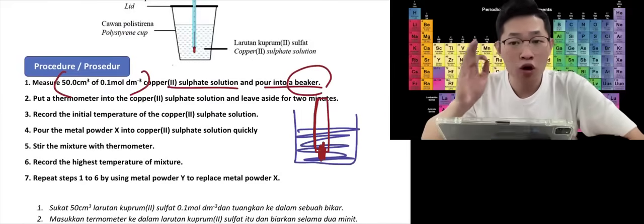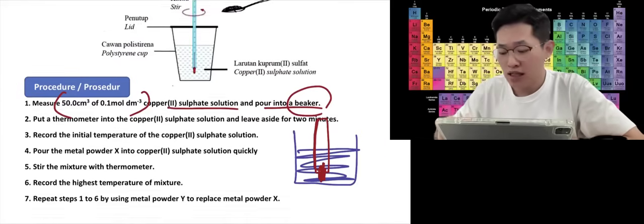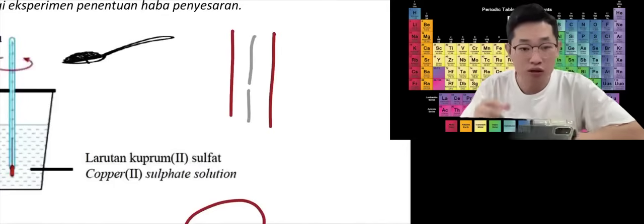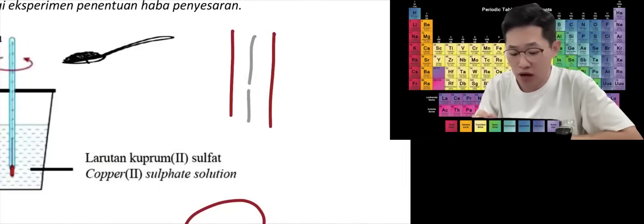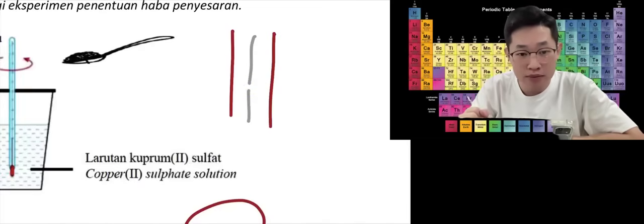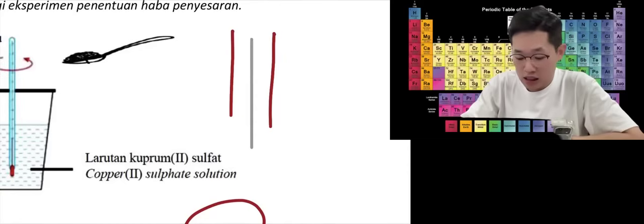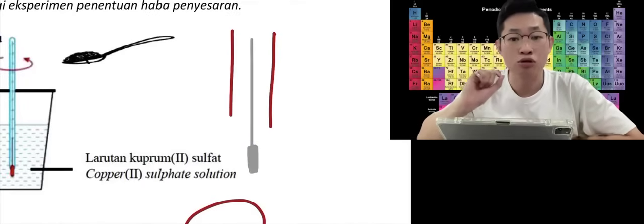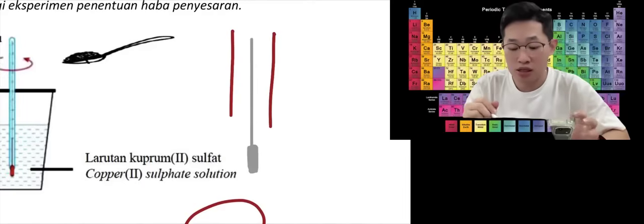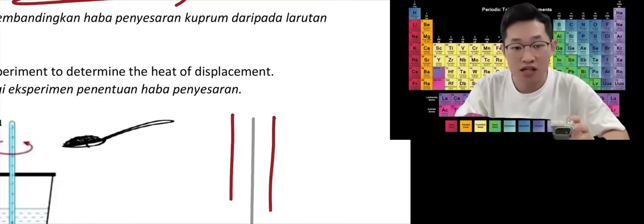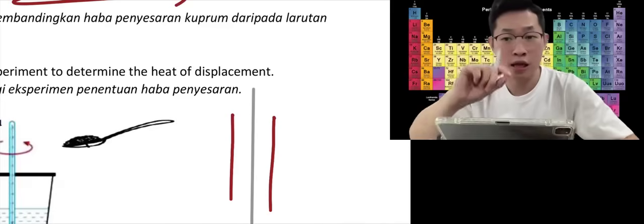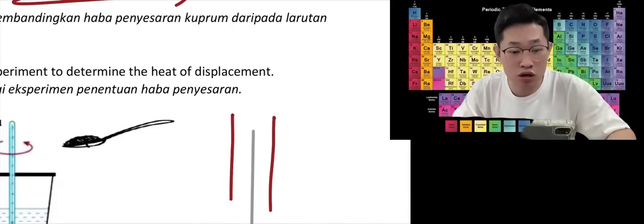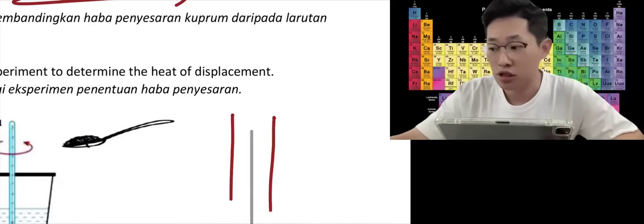Before you do the experiment, test the thermometer to see whether it is working. Check the mercury — there might be air bubbles in the middle. Please don't use a thermometer with a gap in the mercury. Make sure there is no gap. To test it, just use your finger to touch the bulb and you should see the temperature going up. If the temperature doesn't go up even after rubbing your finger to warm it, ask your teacher to replace it with a new one.